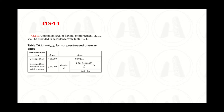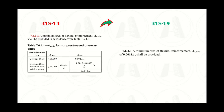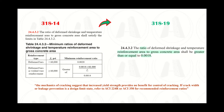The next change in the code is regarding the minimum required flexural reinforcement. This minimum required flexural reinforcement in one-way or two-way slabs for crack control has been made independent of the grade of reinforcement. The reinforcement ratio of 0.18% of the gross area is now required for all grades of rebars. The code argues that the mechanics of cracking suggest that increased yield strength provides no benefit for control of cracking. If crack width or leakage prevention is a design limit state, you are referred to ACI 224 or ACI 350 for recommendations.